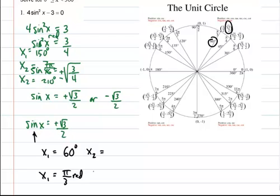My second angle where I have a sine ratio equal to root 3 over 2 is in the second quadrant, and that will be at 120 degrees. That's also equal to 2 pi over 3 radians.